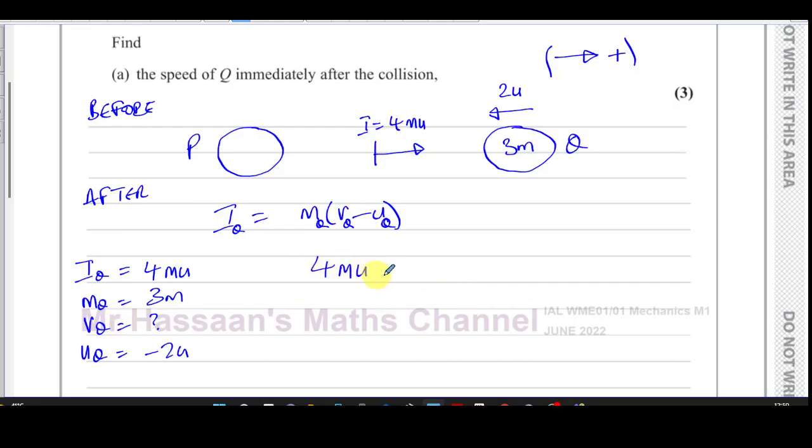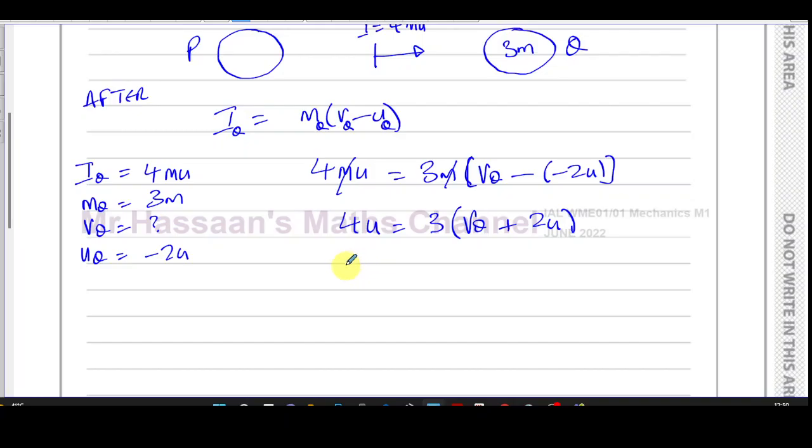Very important to realize we've chosen that direction as positive, which means this is negative. If we chose the other direction as positive, this would be positive and that would be negative, and we'd get the same answer in the end. So I_Q equals 4mu equals 3m(v_Q - (-2u)). Now the mass of Q is 3m and the velocity of Q is what we have to find—the final velocity minus the initial velocity, which is minus negative 2u. There's our situation set up.